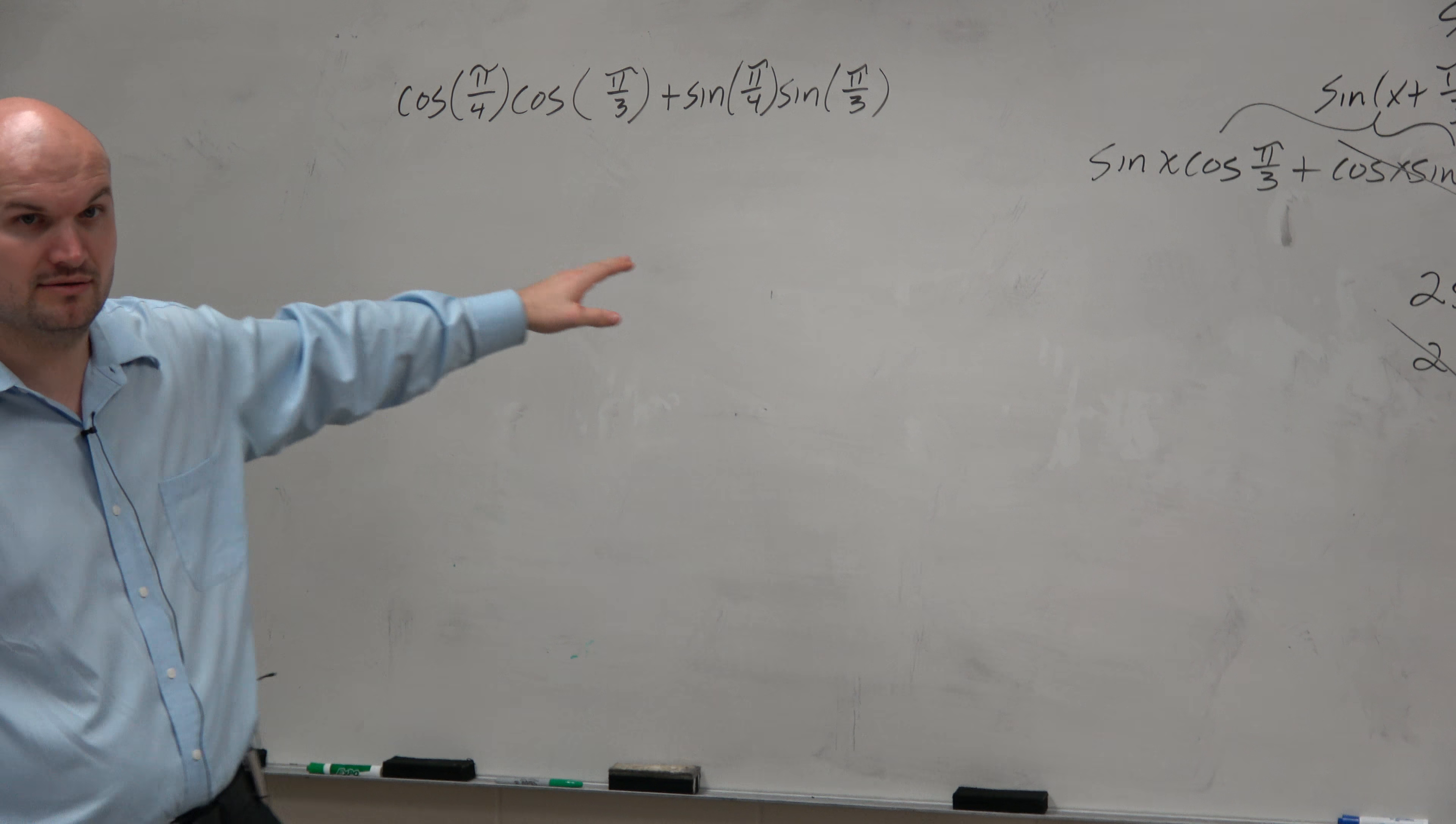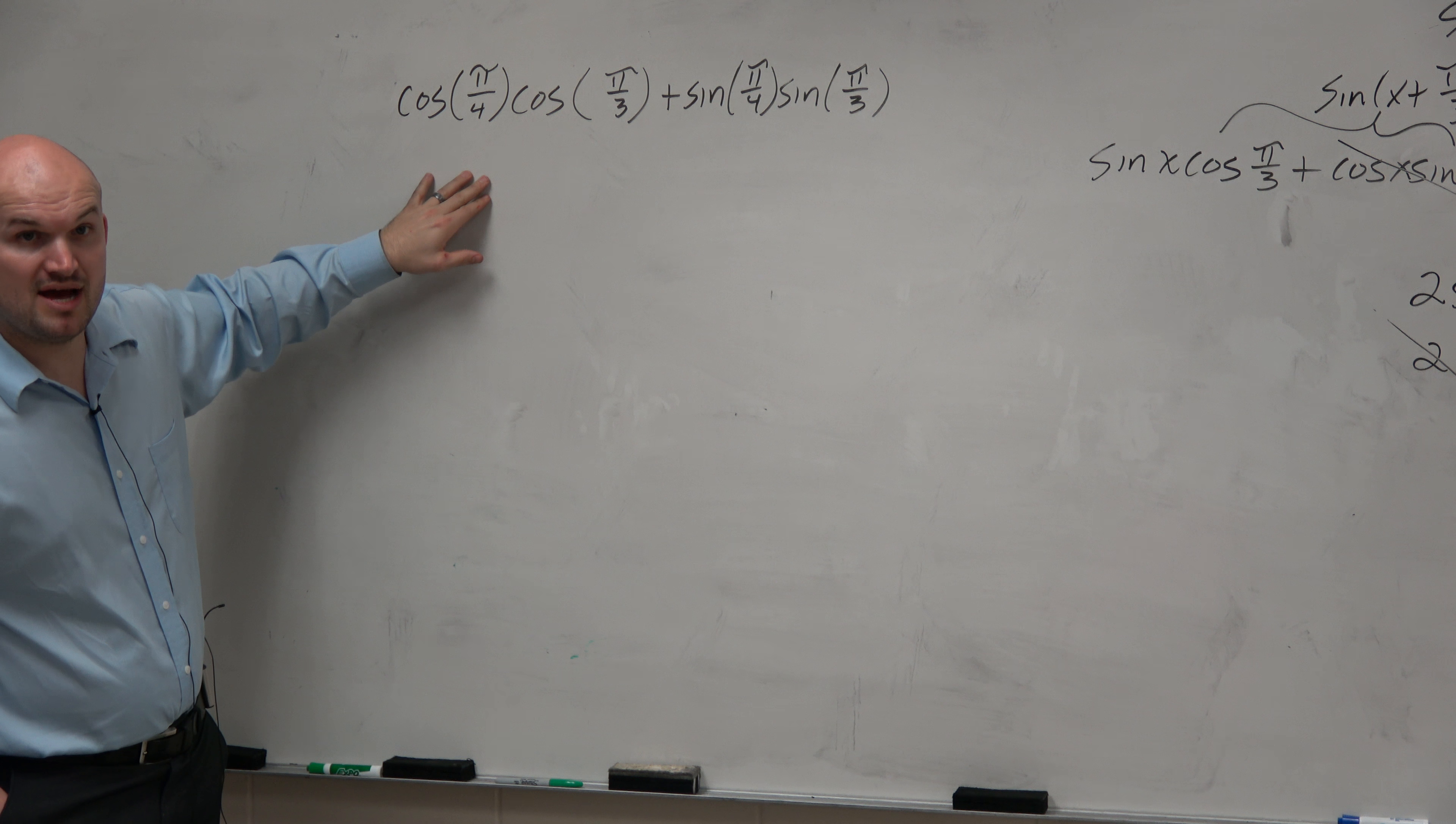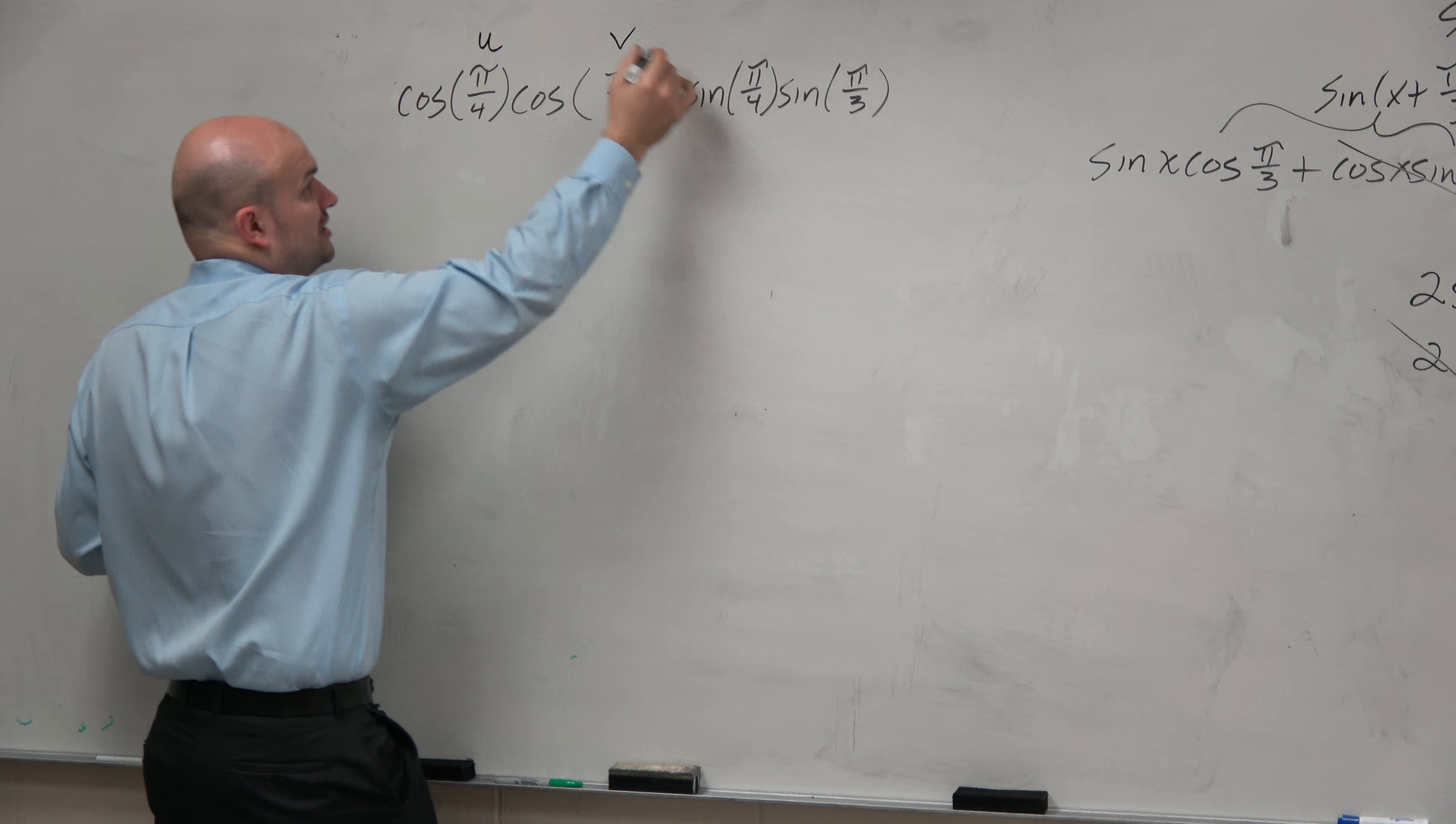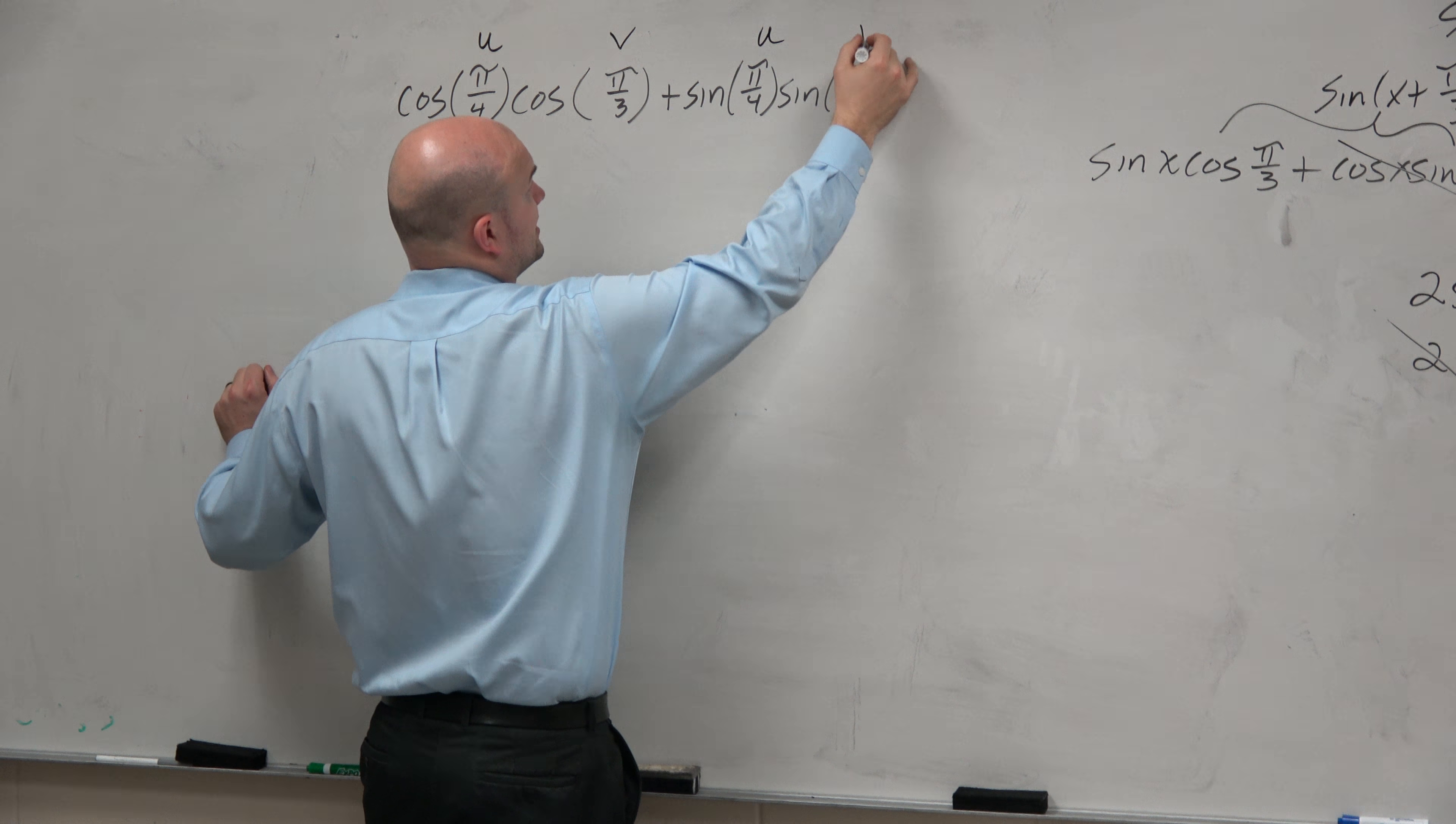Now, which one does this look like? The cosine, right? So a couple things when we're looking at this, we know that here's my angle u, here's v, here's angle u, here's v.